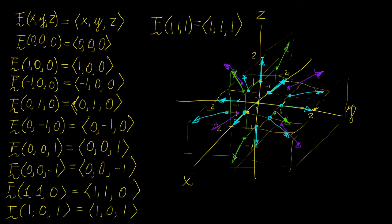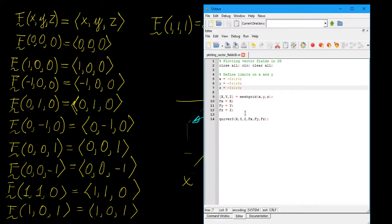So it looks like there's some kind of explosion here — you have nothing happening at the origin, but as you move further outwards, the vectors are increasing. Now let's open Octave or MATLAB and see how we can plot this.